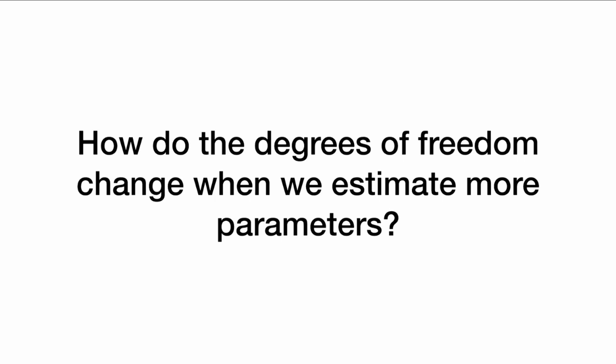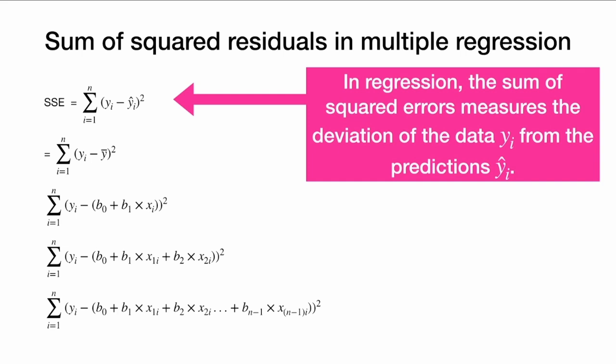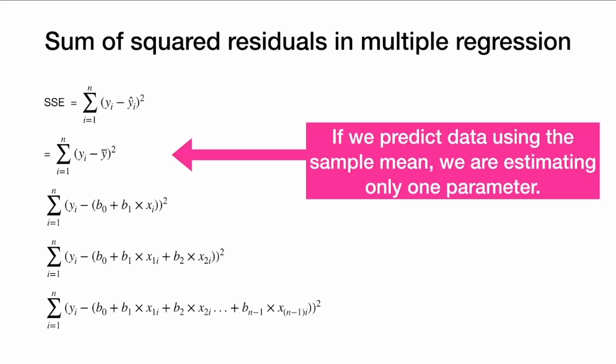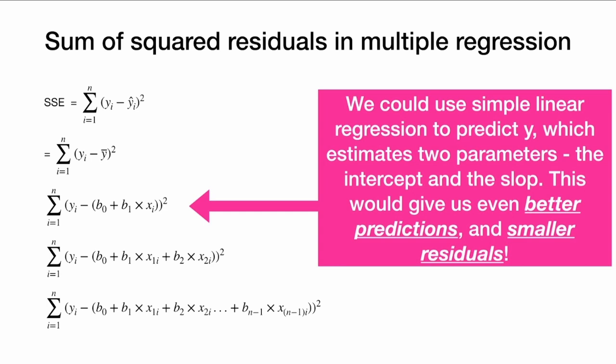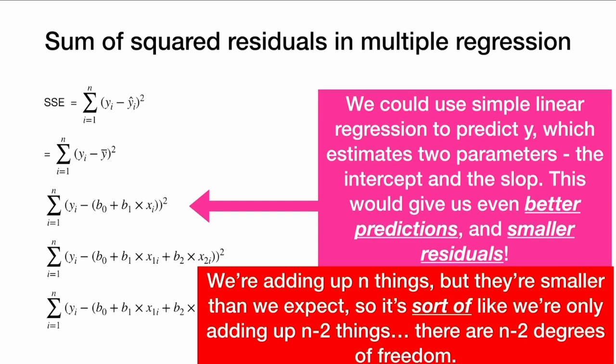So how do the degrees of freedom change when we estimate more parameters? Let's look at the sum of squared residuals in multiple regression. The sum of squared errors measures the deviation of the data yi from the predictions y-hat-i. If we predicted using only the sample mean and no other predictors, we are estimating one parameter — this has n minus one degrees of freedom. Using simple linear regression estimates two parameters, the intercept and the slope, giving even smaller residuals. So we're adding up n things, but they're smaller than expected — it's sort of like adding up n minus two things. There are n minus two degrees of freedom.